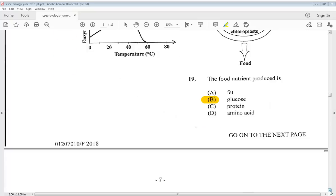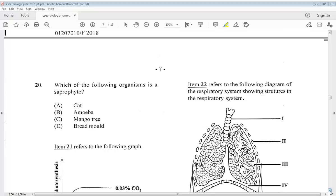Let's go to number 20. Which of the following organisms is a saprophite? Cat, amoeba, mango tree, or bread mold? We know the answer for 20 is D, bread mold.